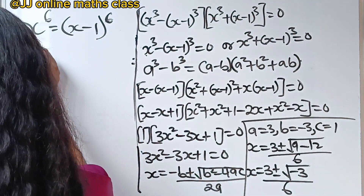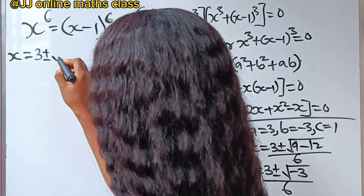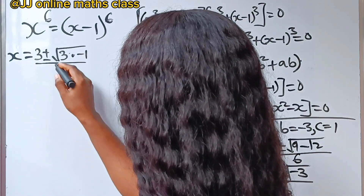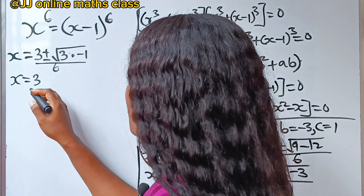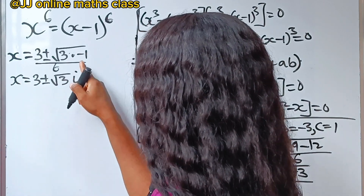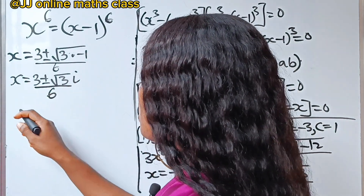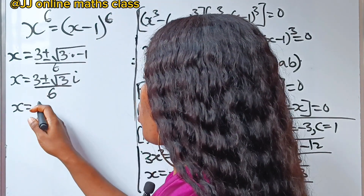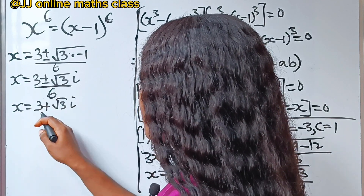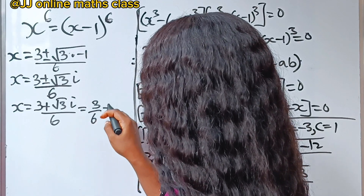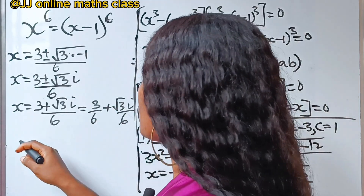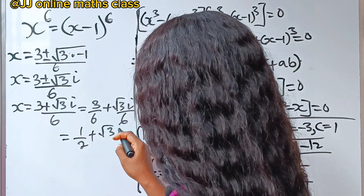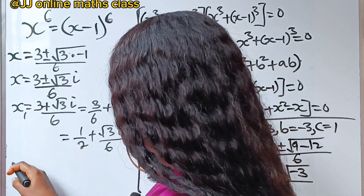We simplify: x equals three plus or minus square root of three times minus one, divided by six. Since square root of minus one is i, we get x equals three plus or minus root three i, all over six. Splitting: x one equals three over six plus root three i over six, which simplifies to one half plus root three i over six.